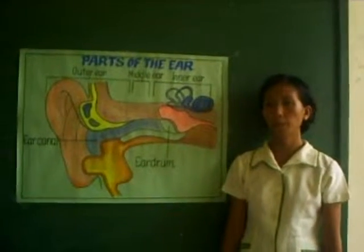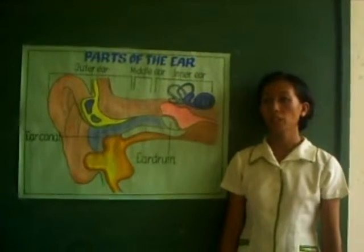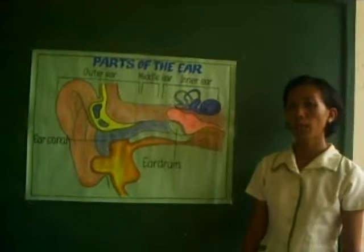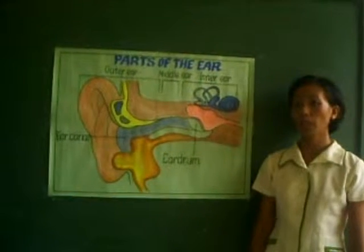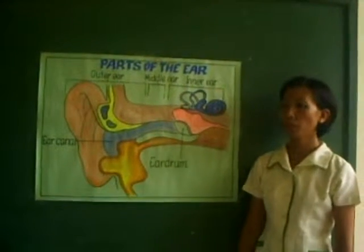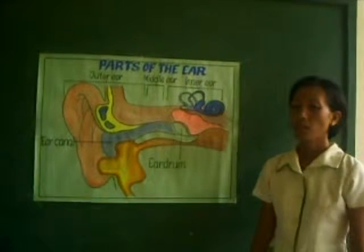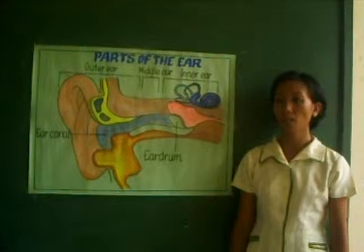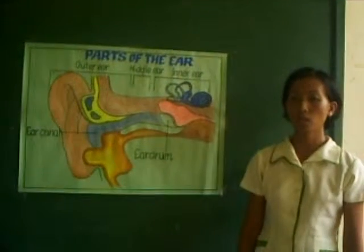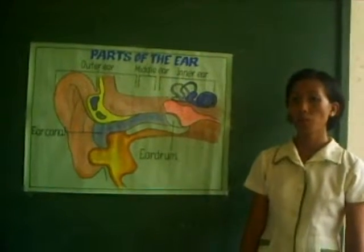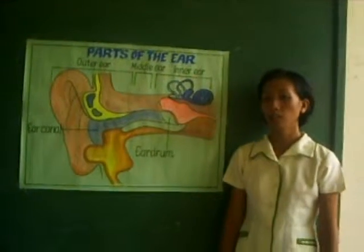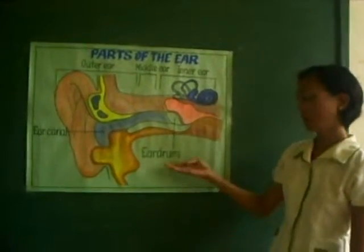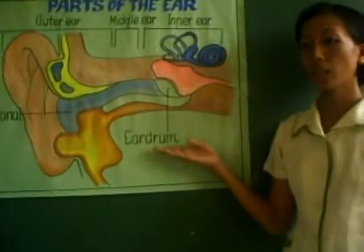The external auditory canal is a short, narrow chamber about 1 inch long by one-quarter inch wide, carved into the temporal bone of the skull. Ceruminous glands line the skin-lined walls and secrete a waxy yellow substance called earwax, or cerumen. Sound waves entering the external auditory canal eventually strike the tympanic membrane, or eardrum, and cause it to vibrate.